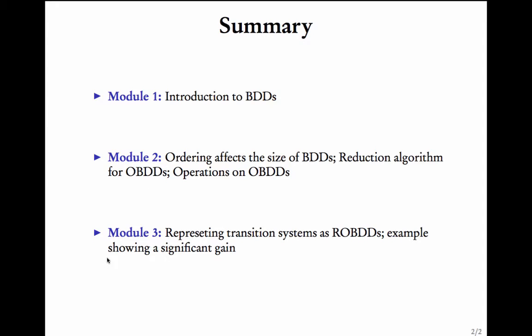In module 3, we saw how we can encode a transition system as an ROBDD. The entire transition system can be seen as an ROBDD, and we saw an example which gives us a significant gain if we represent the system as an ROBDD. CTL and model checking algorithms can be efficiently implemented over ROBDDs. See you again with a different set of lectures.